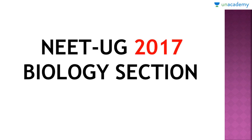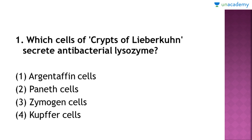Let's see the NEET-UG 2017 Biology section, question one: which cells of the crypts of Lieberkühn secrete the antibacterial lysozyme? Option one: Argentaffin cells, two: Paneth cells, three: zymogen, and four: Kupffer cells.